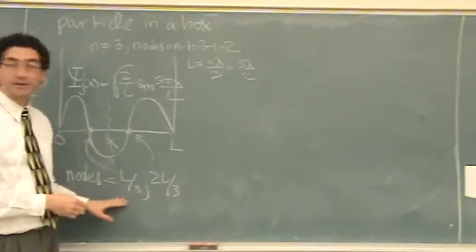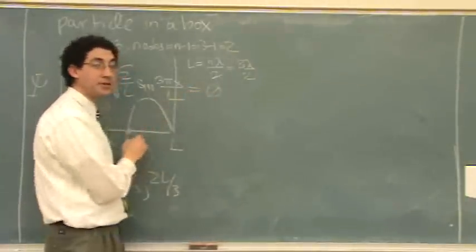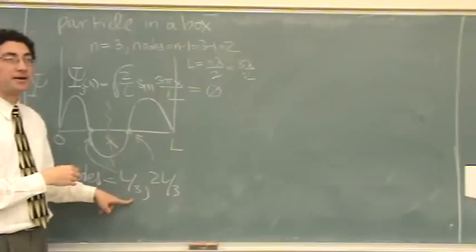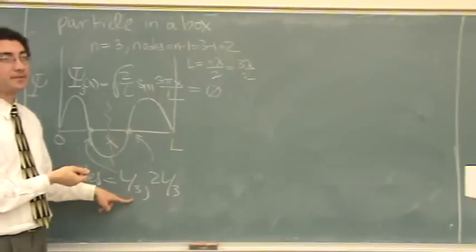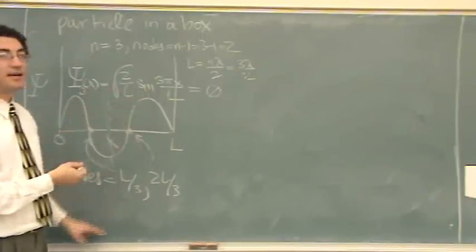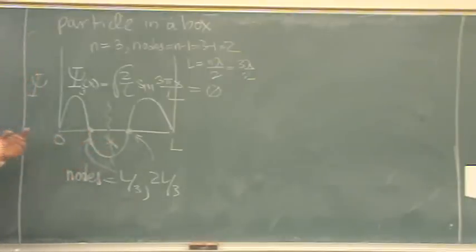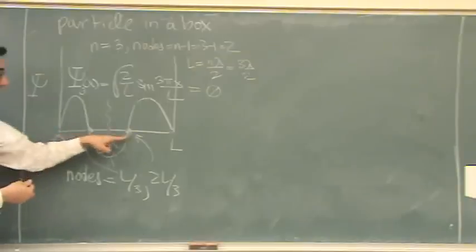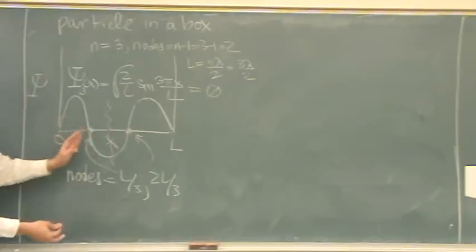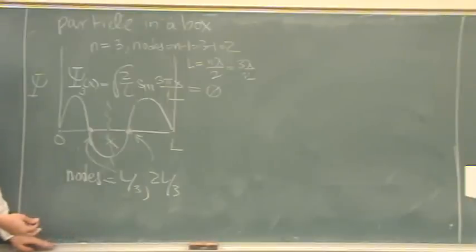Another thing you could do to find the nodes: set the wave function equal to zero, and if you're good at trig, the node positions come out. We're basically setting it equal to zero to find them, but I think the easiest way for most people is just to look at the graph — it looks like it's divided into three parts, so one third, two thirds, et cetera.